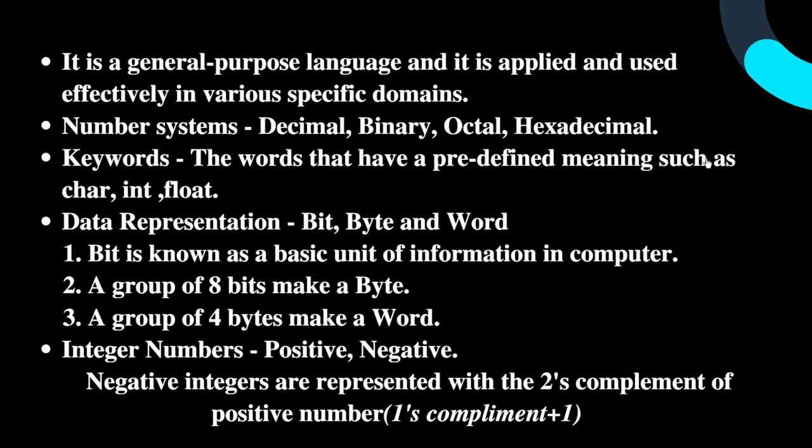We'll talk about a few terms involved in the C language. First are keywords — words that have a predefined meaning such as char, int, and float. Then data representation: bit, byte, and word. A bit is the basic unit of information in a computer. A group of eight bits makes a byte. A group of four bytes makes a word.